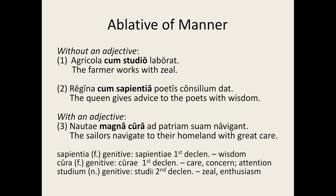Here are some examples. First: agricola cum studio laborat — the farmer works with zeal. We don't have an adjective to modify studio here, so cum must be used. Second: regina cum sapientia poetis consilium dat — the queen gives advice to the poets with wisdom. A more natural translation would be: the queen knowledgeably advises the poets. Notice cum must be used here too.